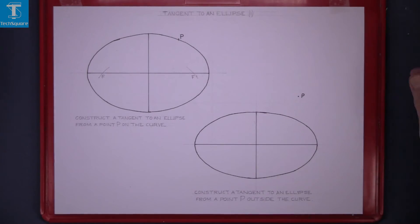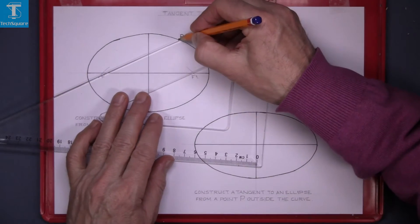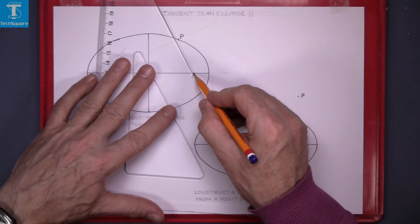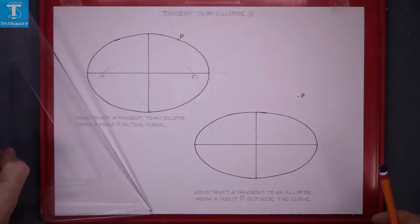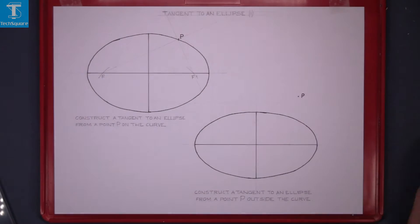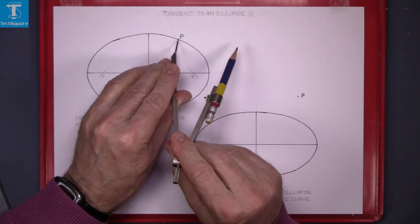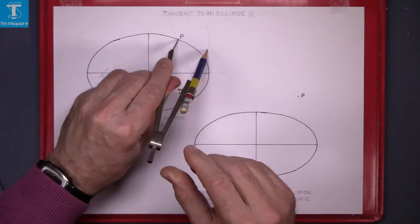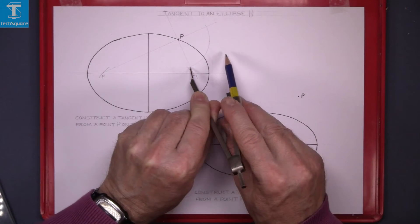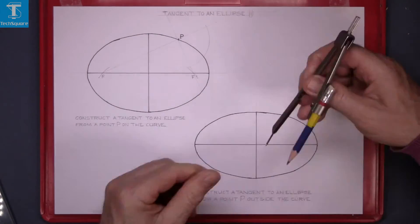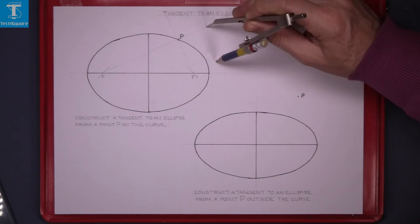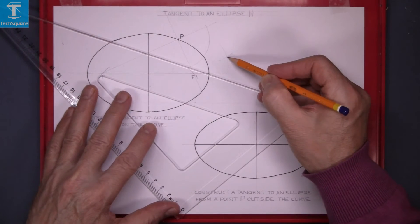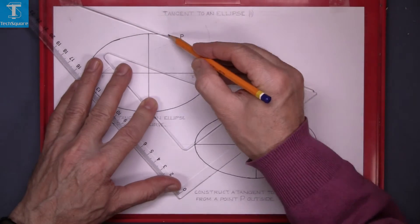Join F to P and P to F1. Now bisect this angle here. Put the pointer compass in P. Draw an arc. Where those two arcs intersect, that's the bisector. Join that point through P and that's the tangent.